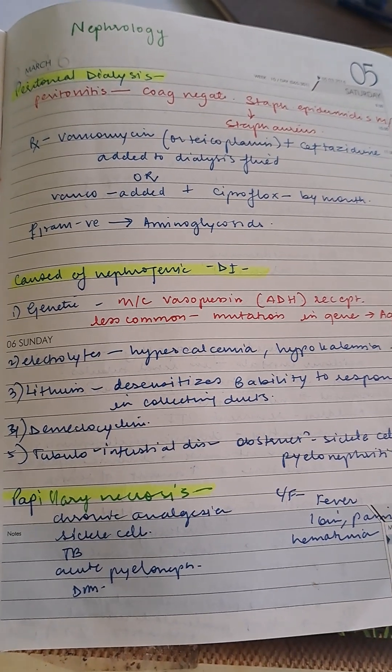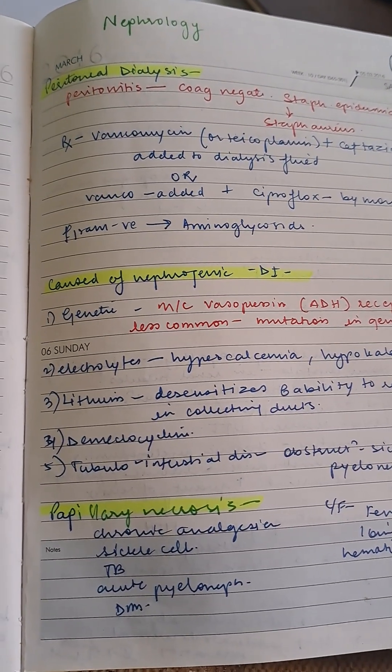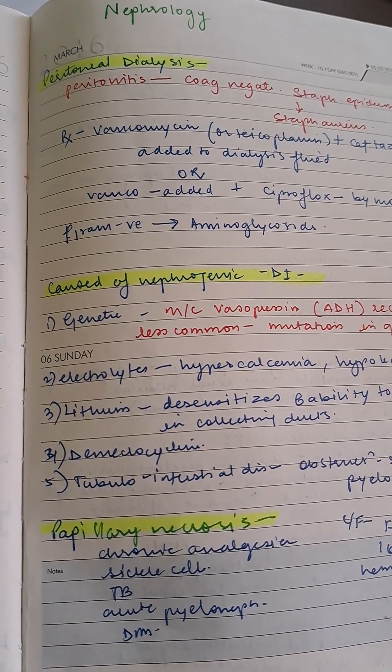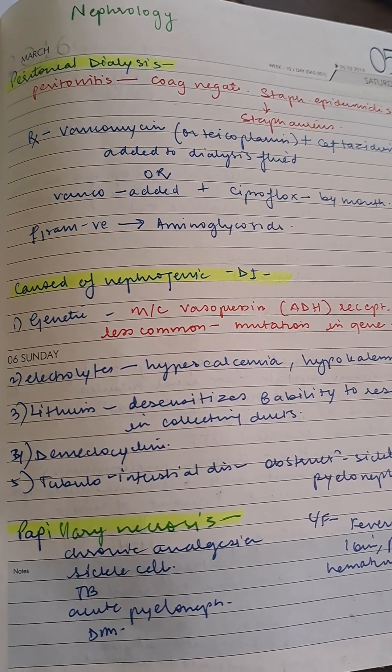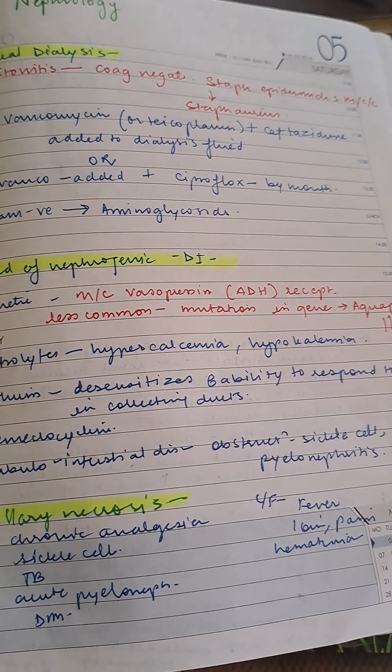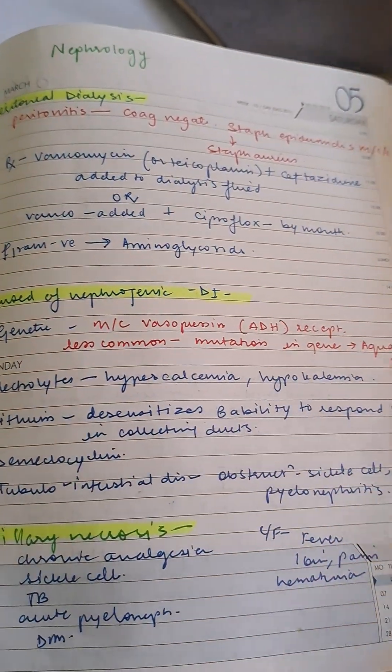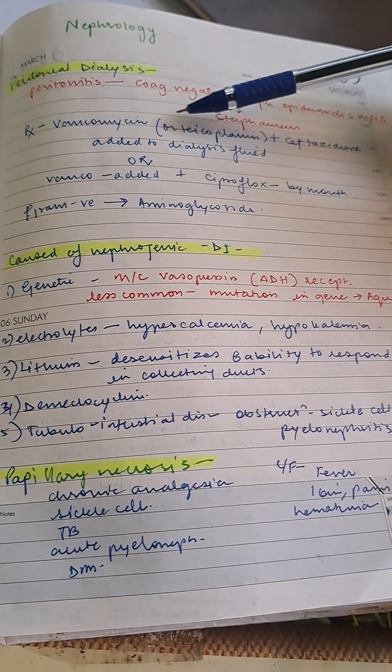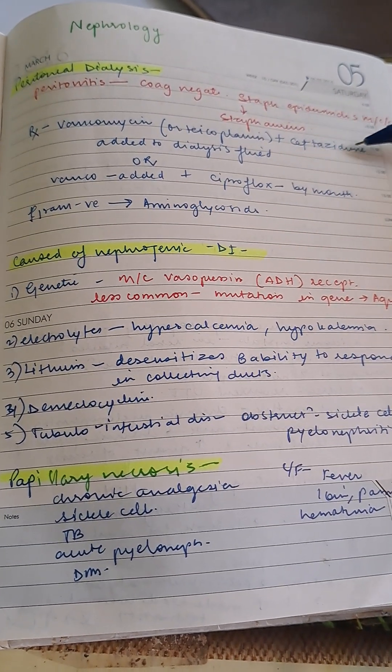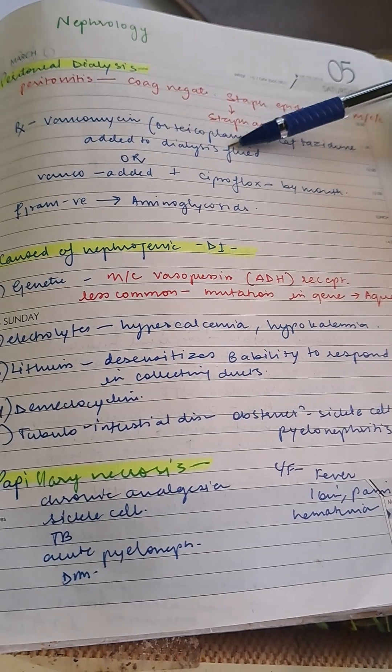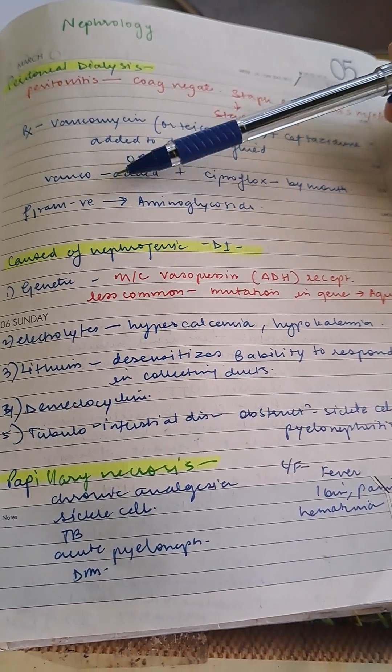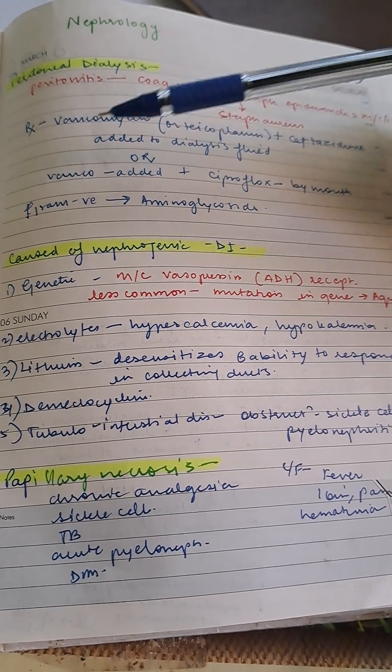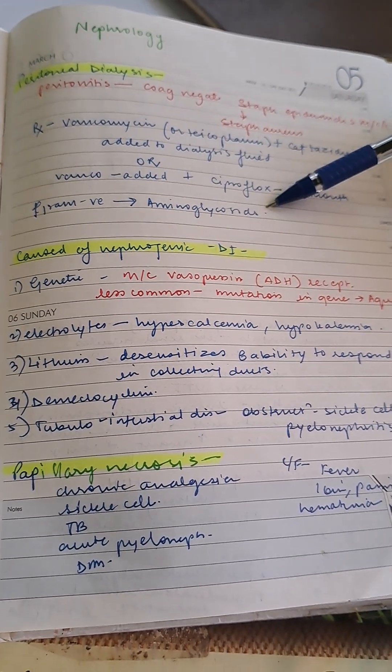Let's revise nephrology, MRCP notes. In peritoneal dialysis peritonitis, coagulase negative staph epidermidis is the most common cause, followed by staph aureus. Treatment includes vancomycin or tecoplanin plus ceftazidime added to dialysis fluid, or vancomycin with oral ciprofloxacin. For gram negatives, use aminoglycosides.